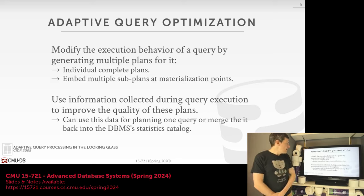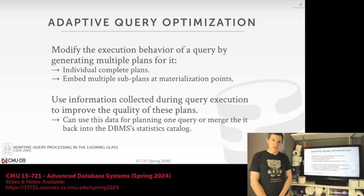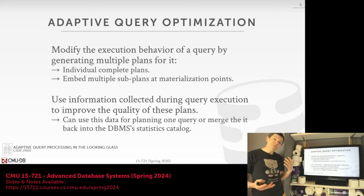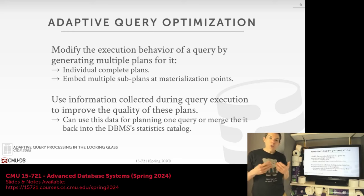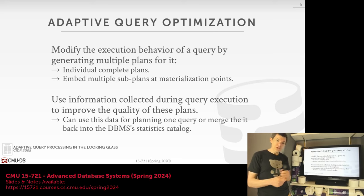The technique we're talking about today is called adaptive query optimization — sometimes called adaptive query processing in research literature; they're essentially synonymous. The idea is that this technique allows the database system to modify the query plan to better fit what the actual underlying data looks like. We can modify the query plan by generating an entirely new plan — throwing away the old one and starting over — or we could modify a subset of the query plan by introducing new sub-plans at different materialization points, potentially switching from one plan strategy to another.